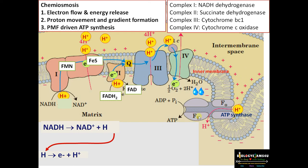Protons move through the F0 region, which is the proton channel of the ATP synthase enzyme. The F1 region is the catalytic site where ADP and inorganic phosphate have active sites. Protons move through F0, reach the F1 site, and neutralize. This proton movement creates energy that is used for combining ADP and inorganic phosphate to form ATP. This movement of protons — called the proton motive force — drives ATP synthesis.